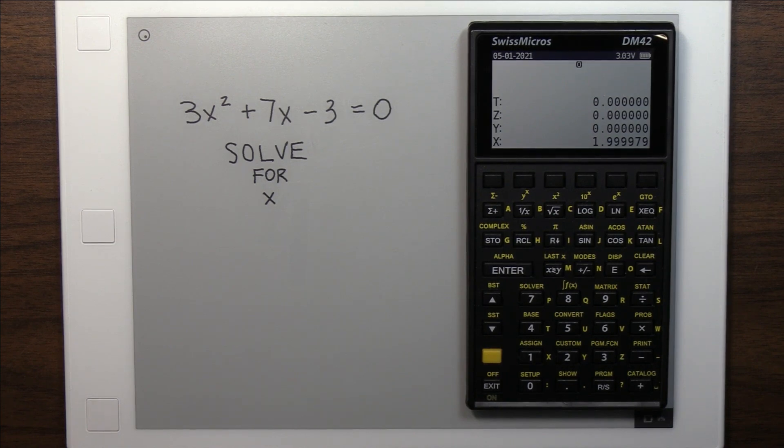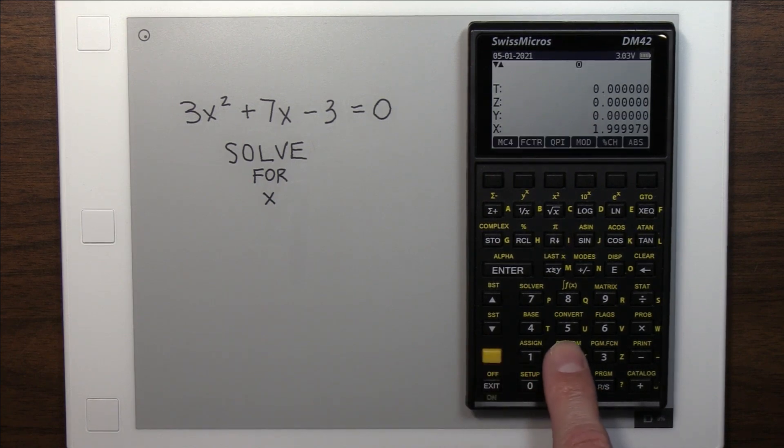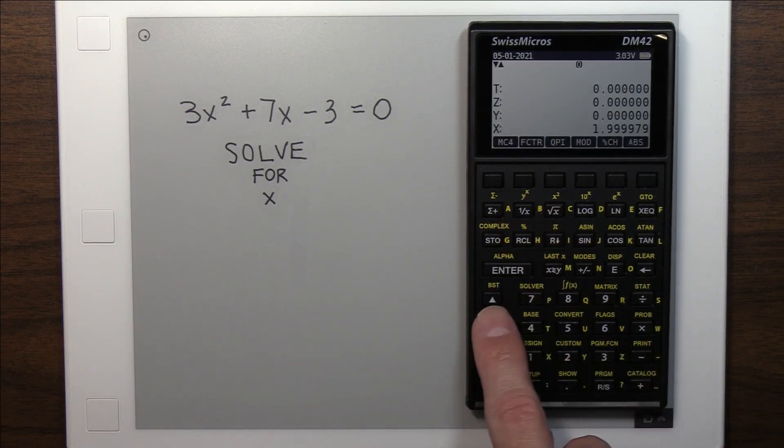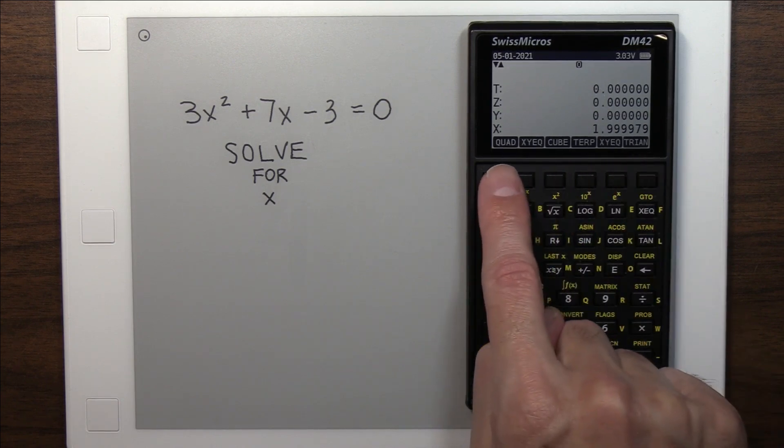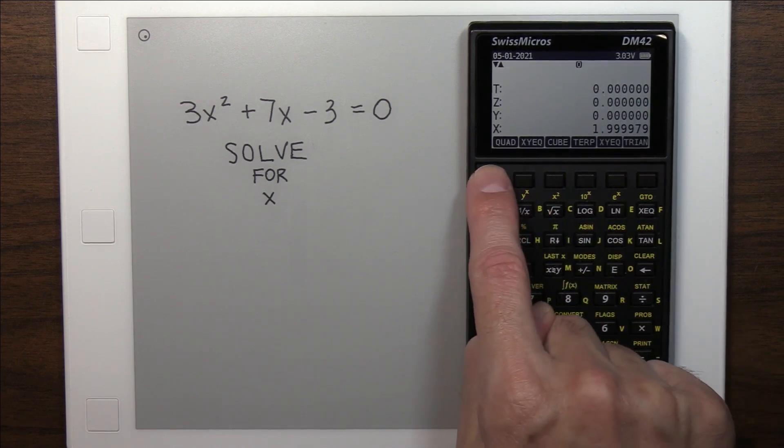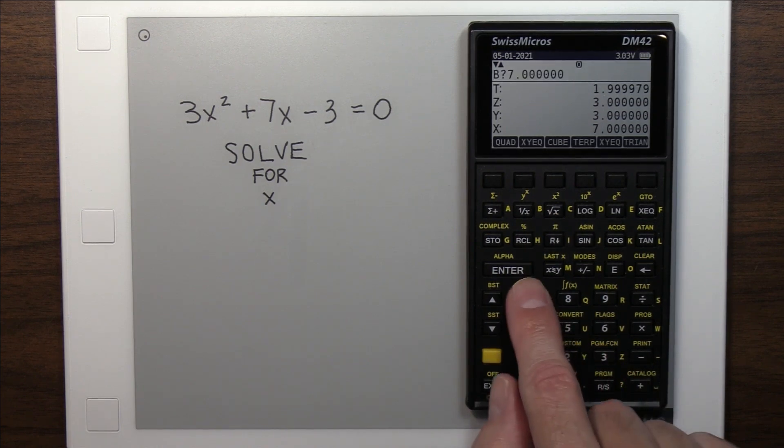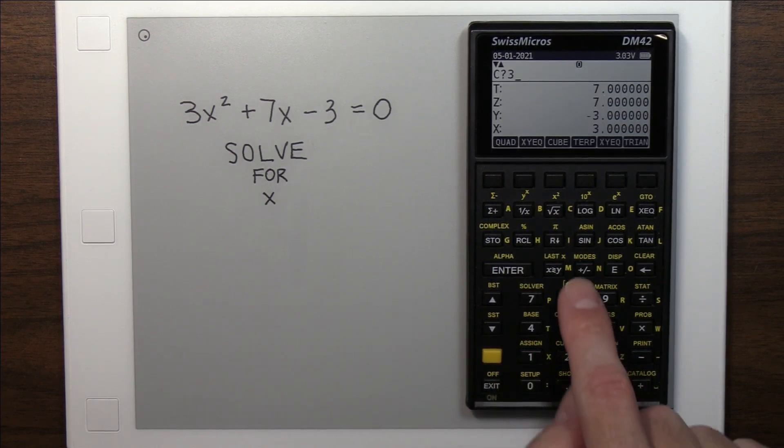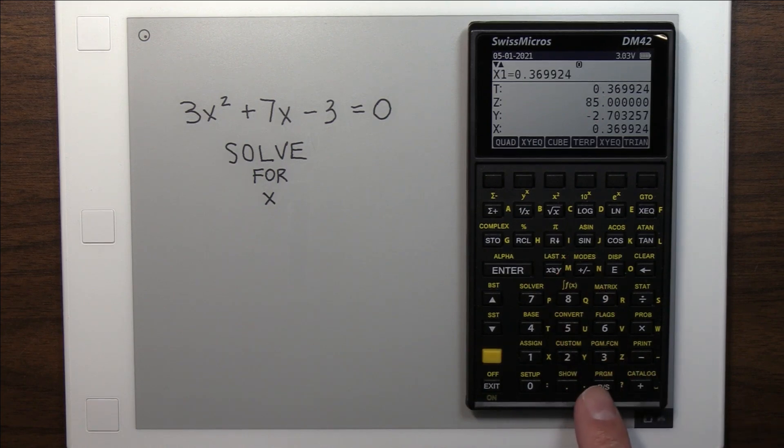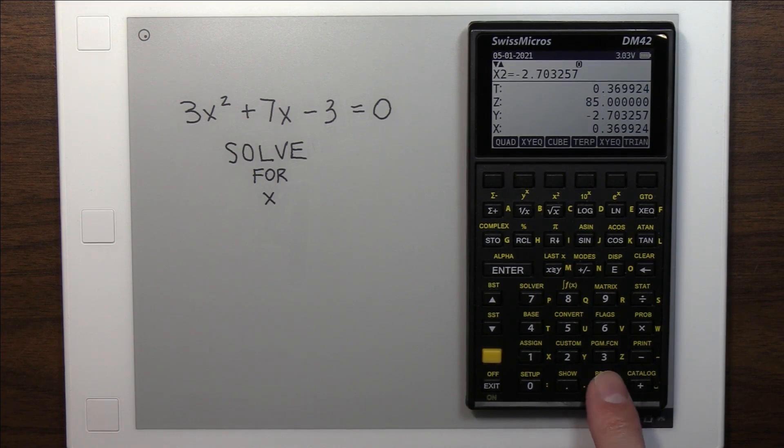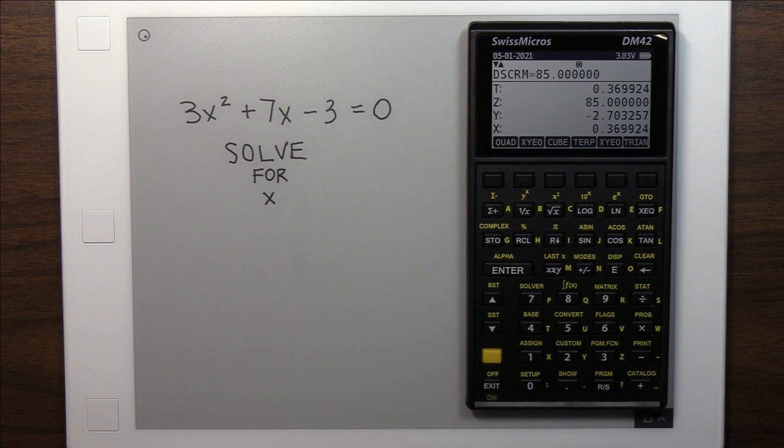Alright. So now let's look at doing these with the DM42. I have a custom menu set up here with some of these useful programs. So quadratic, I pick it and it's running a program. I'll put in my A value, I think these are already in there, my B value and my C value. And it gives me the two roots, x1, x2. And it also gives me the discriminant. I added that because sometimes that's helpful to know if you're looking for exact answers.